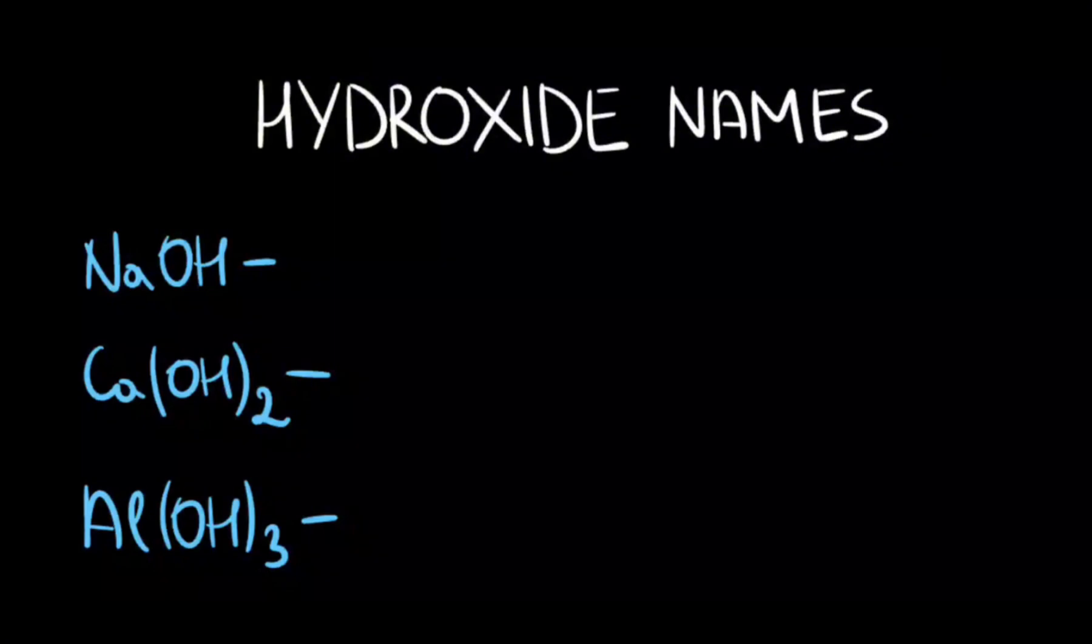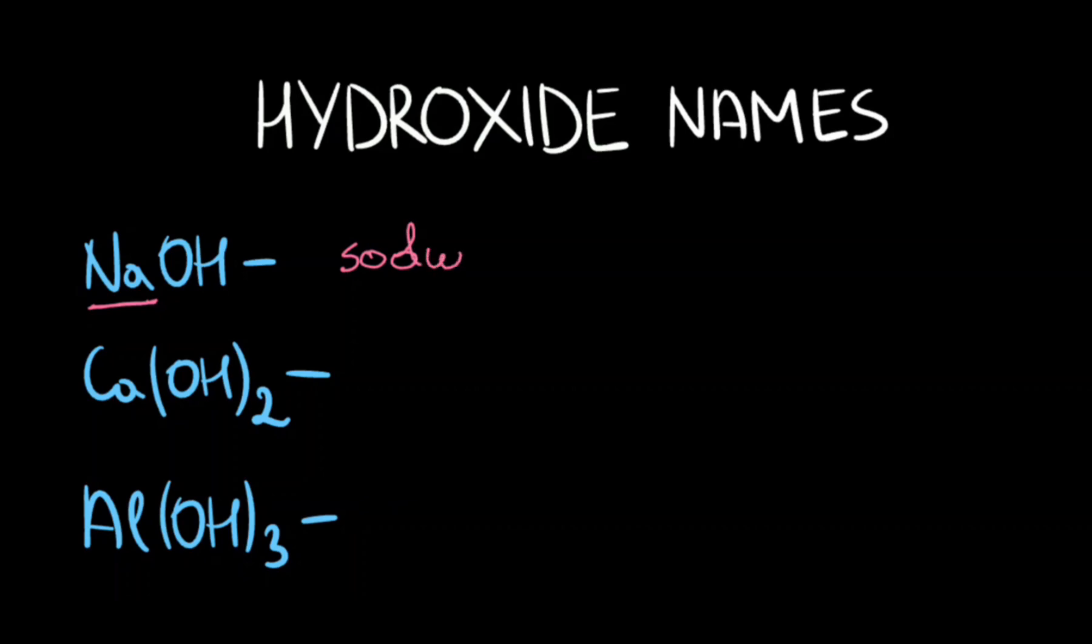Lastly, let's look at the most common hydroxide names. To name hydroxides, you first name the metal in the periodic table, and then add hydroxide at the end.